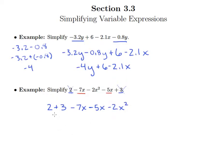So 2 plus 3 is 5. Negative 7 minus 5 is really negative 7 plus negative 5, so that's minus 12x minus 2x squared.